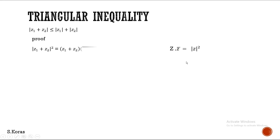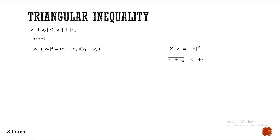Modulus of Z1 plus Z2, the whole square, is equal to Z1 plus Z2 into Z1 plus Z2 the whole bar. That is, modulus of a complex number squared is nothing but that complex number into its conjugate. The same way, this conjugate: Z1 plus Z2 the whole bar — we have a formula for this. That is, Z1 plus Z2 the whole bar is nothing but Z1 bar plus Z2 bar.